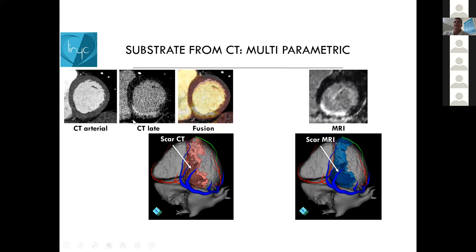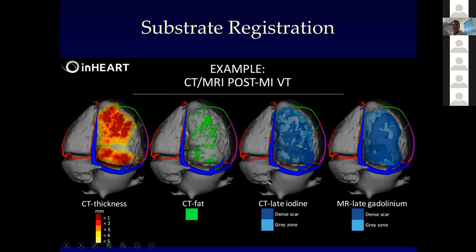From this we get the late iodine, the arterial phase with wall thinning. Wall thinning is again a surrogate for scar density, and it's very similar to what we would see on MRI. This is the same part — scar CT, MRI — and the scar looks very similar. You can look at the late iodine enhancement with dense and less dense scar, and the distribution looks very similar. I have a lot of confidence in this.